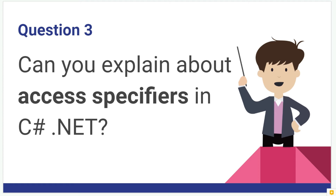Next: can you explain about access specifiers? In C-Sharp .NET when you write a program, you might have written public, private, protected, internal. These are the access specifiers used to define the scope of a specific code or program. You have to be clear about how they are used and what is the significance of each access specifier. I have created the answer and I will tell you where to find it at the end.